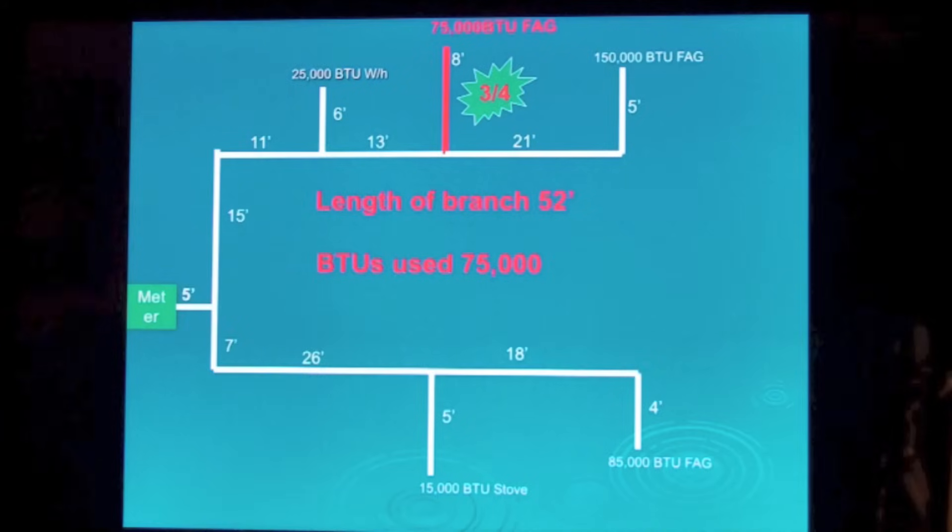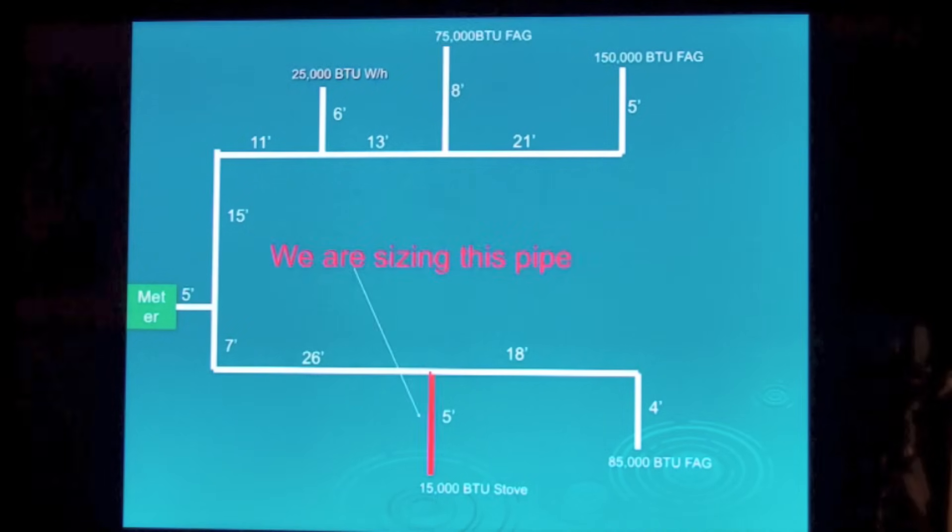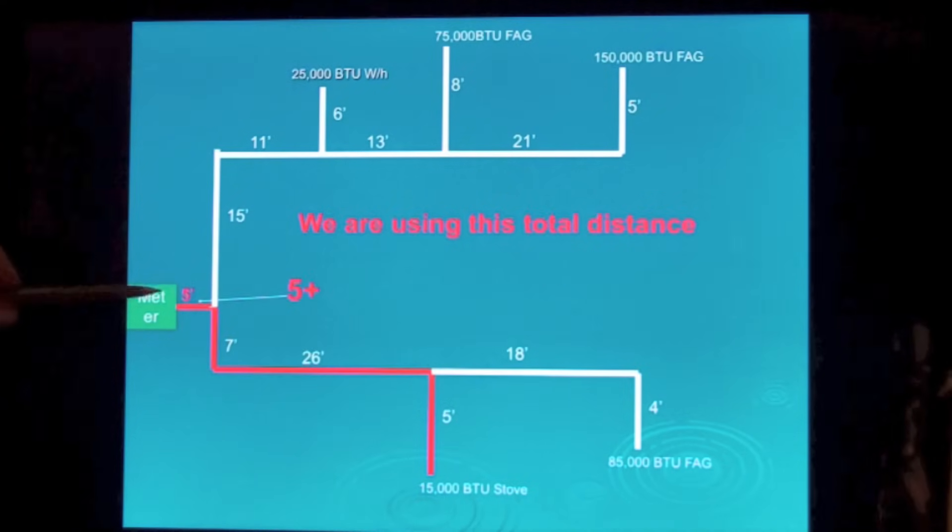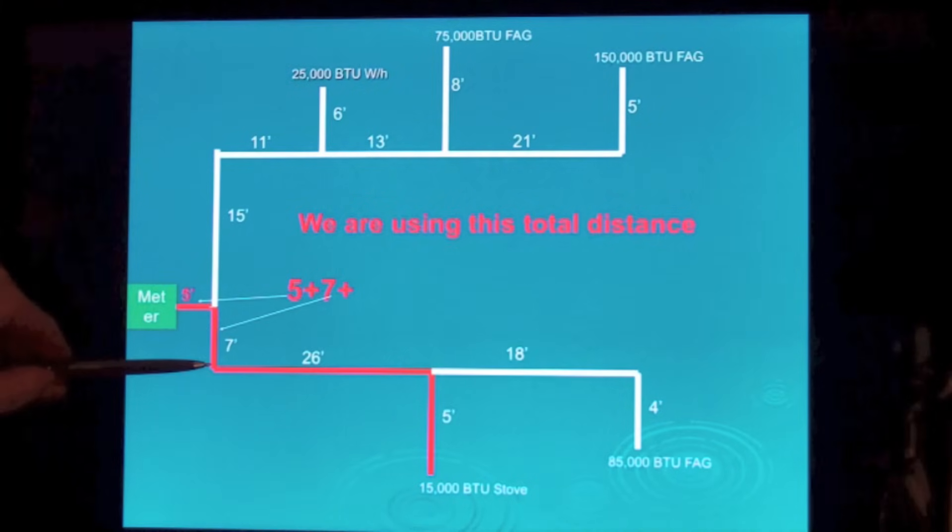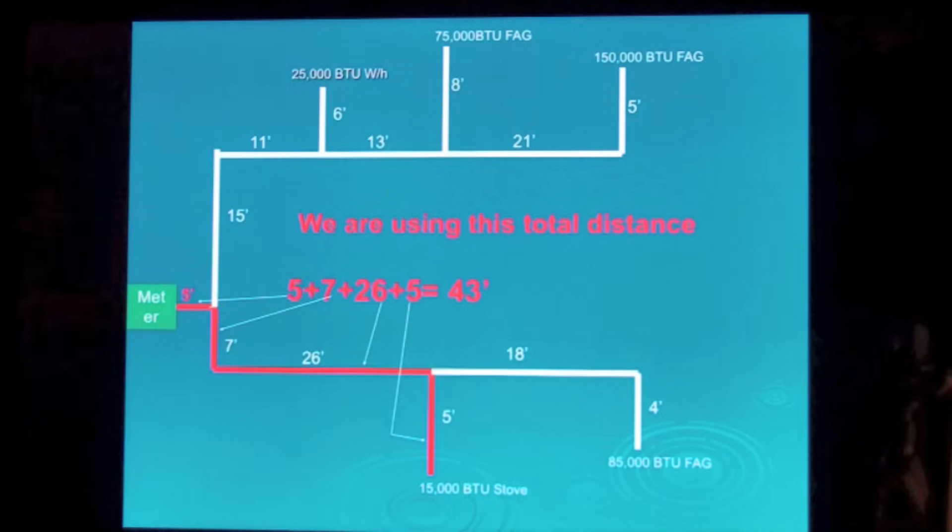We've got one other one we need to do. We're going to size that one down there. Now this one's probably going to be pretty obvious because it's fifteen thousand BTUs. Five foot, seven foot, twenty-six foot, five foot, equals forty-three feet.